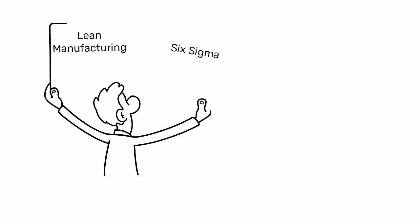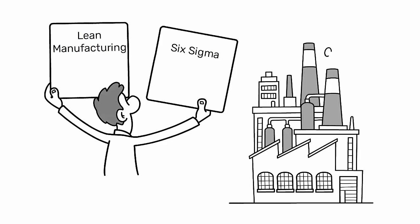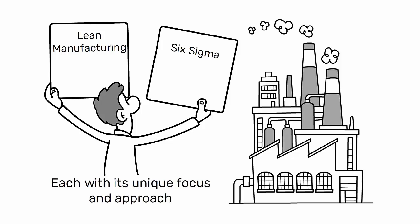Lean Manufacturing and Six Sigma are two distinct methodologies in industrial engineering, each with its unique focus and approach.